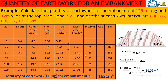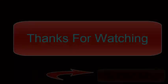The entire embankment is in filling, so there are no values in the cut column. Multiplying the interval by each mean area: we get values of 163, 235, 352, 519, and 352 cubic meters. Adding all these values together — 163 + 235 + 352 + 519 + 352 — gives a total quantity of earthwork of 1621 cubic meters. This is the total quantity of earthwork required for this embankment.